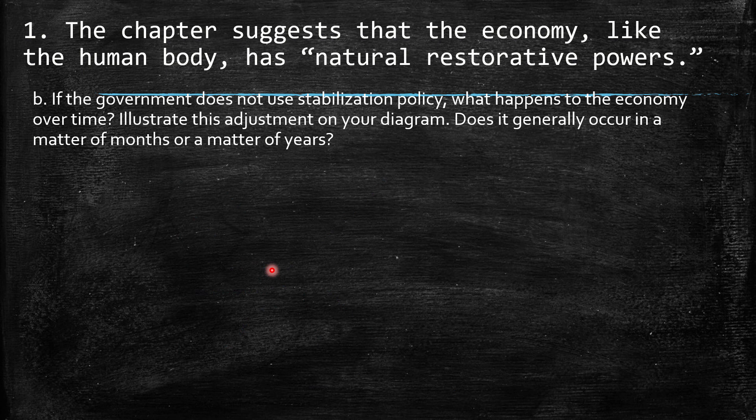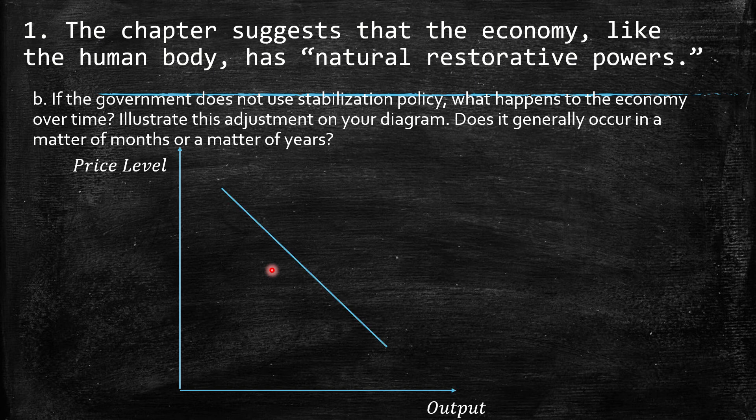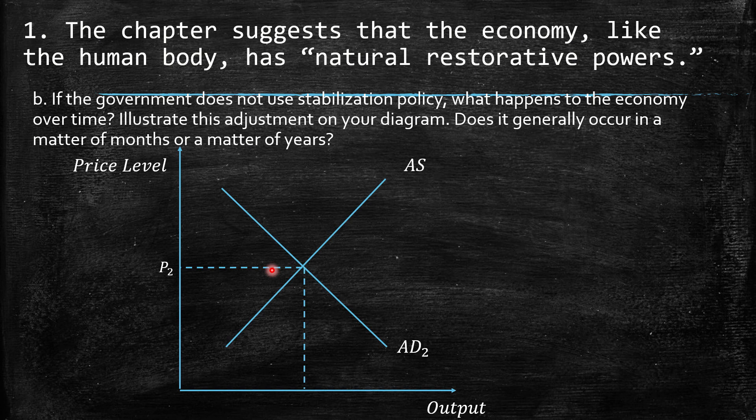Part B: If the government does not use stabilization policy, what happens to the economy over time? Illustrate this adjustment on the diagram. Does it generally occur in a matter of months or matter of years? Well, before Keynes' ideas, who proposed the intervention of government, we had this natural restorative power.